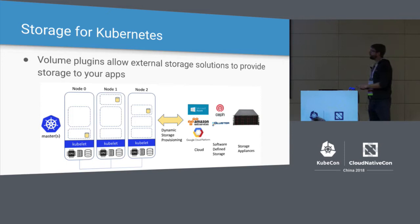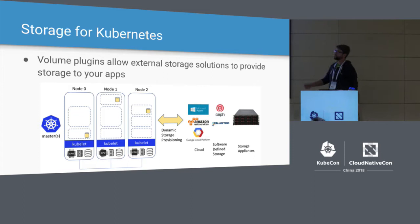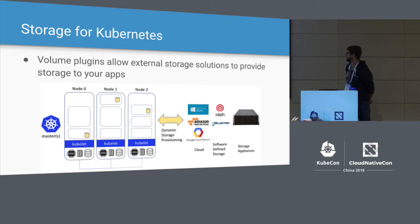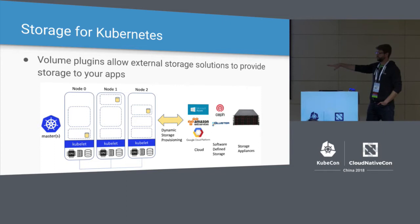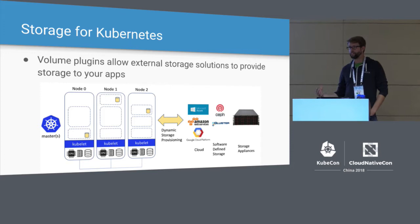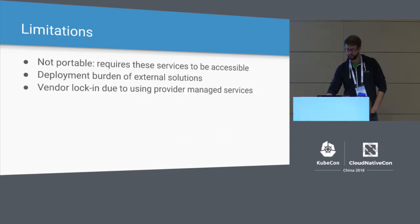Let's talk about traditionally what storage has been like inside Kubernetes. Normally you have an external storage solution running somewhere outside of the Kubernetes cluster. There are a bunch of solutions for that — all the cloud providers have their managed services, like Amazon's Elastic Block Store or Google Persistent Disk. There are also hardware appliances you can set up with an endpoint that your Kubernetes apps can talk to. The key here is that storage is outside the Kubernetes cluster. There was a whole bunch of work done to integrate that storage in with Kubernetes clusters through what's called volume plugins, but let's talk about some of the limitations.